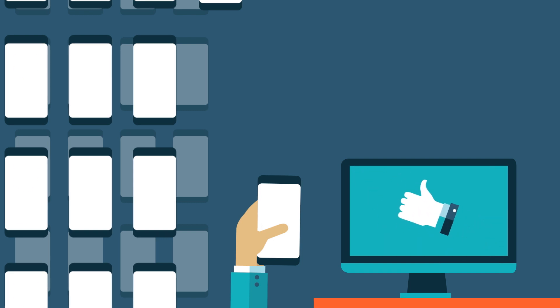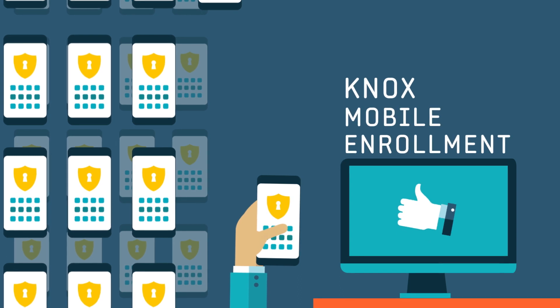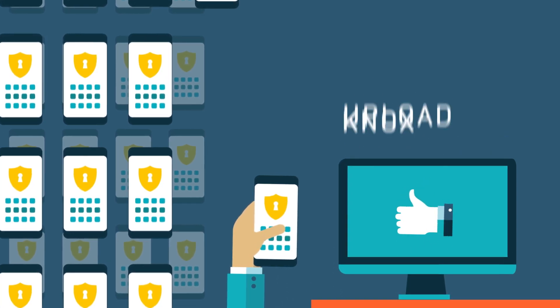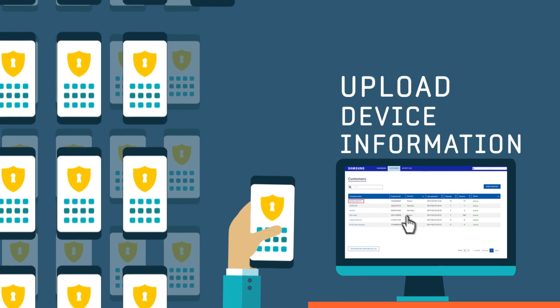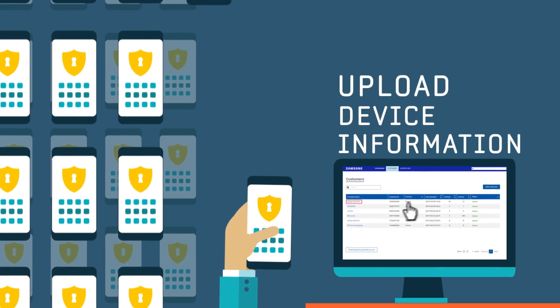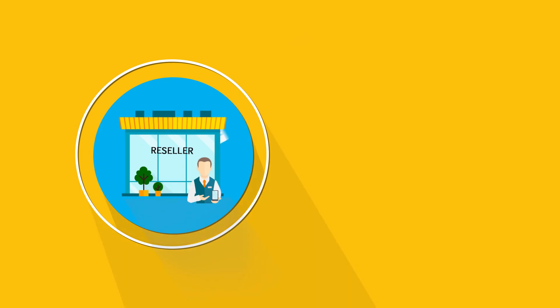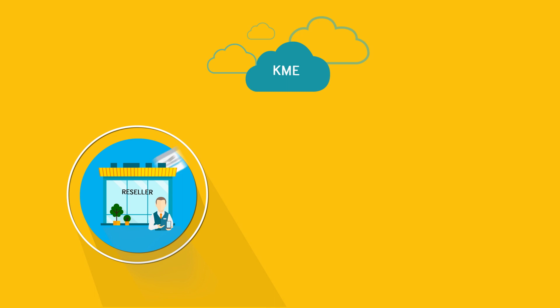With Knox Mobile Enrollment, device resellers participating in the Knox deployment program can upload device IDs for you, making them available for Knox Mobile Enrollment when you purchase devices from them. Simply provide your Knox customer ID to the reseller and you will be automatically notified when the device IDs have been uploaded for you.